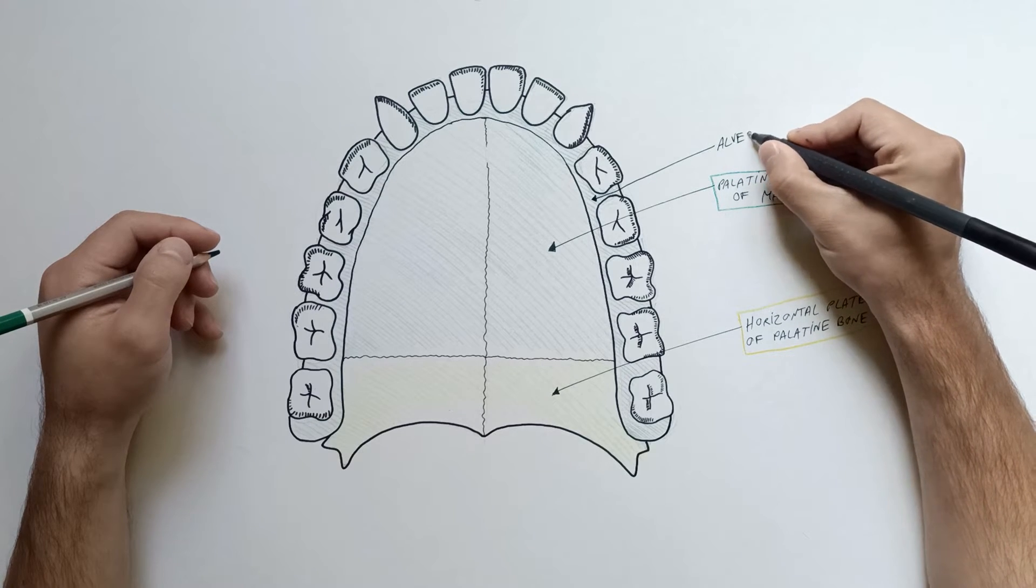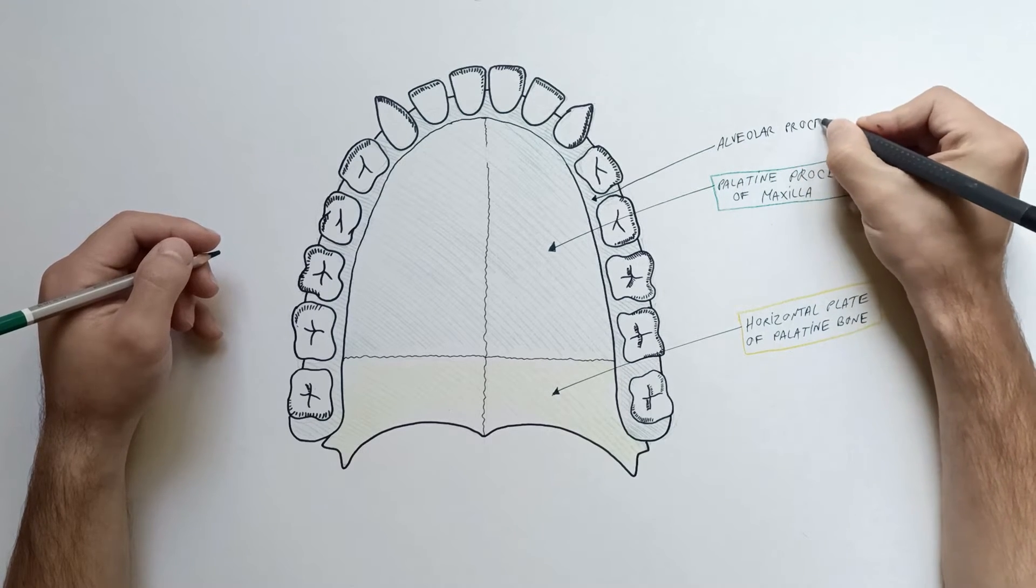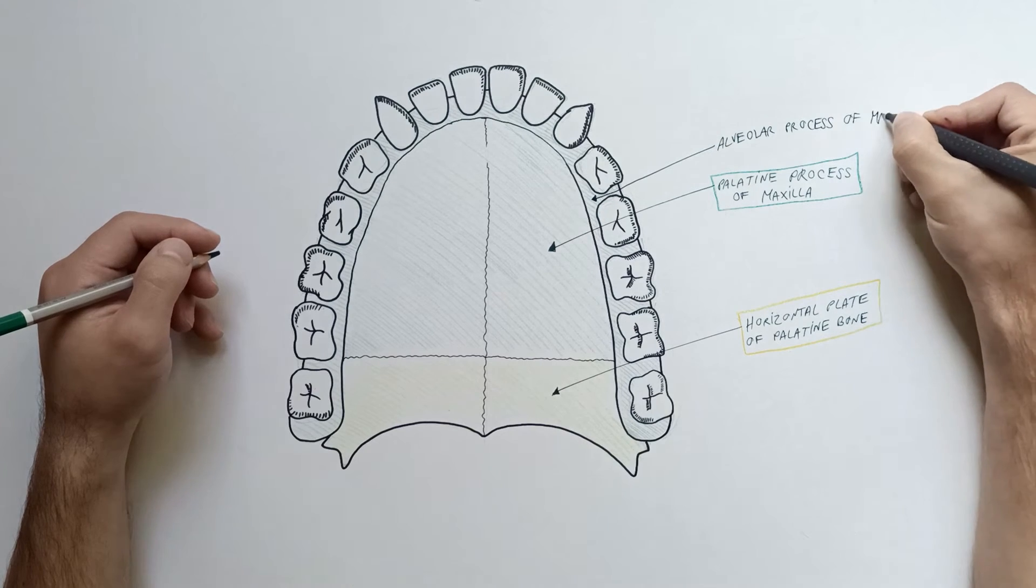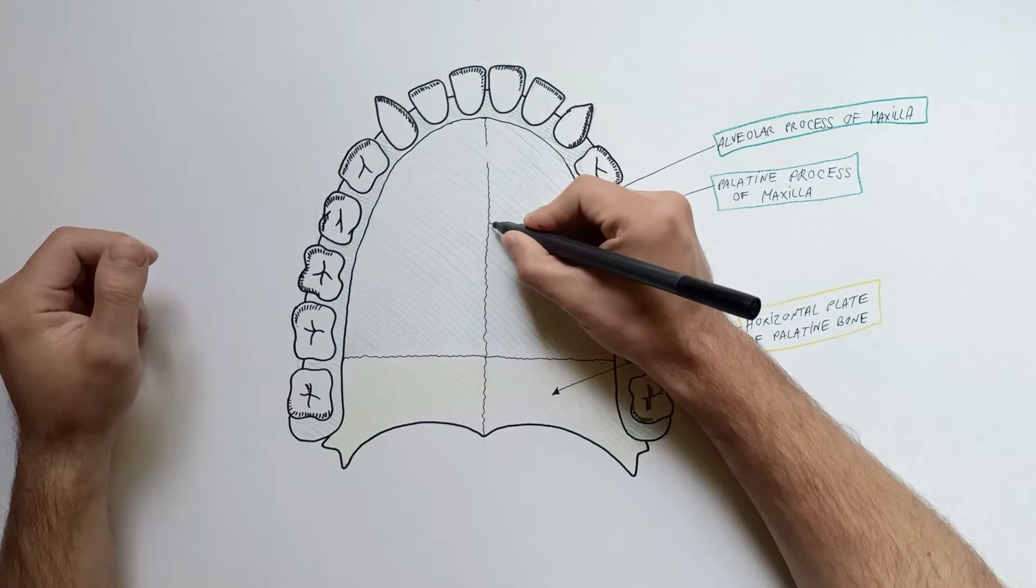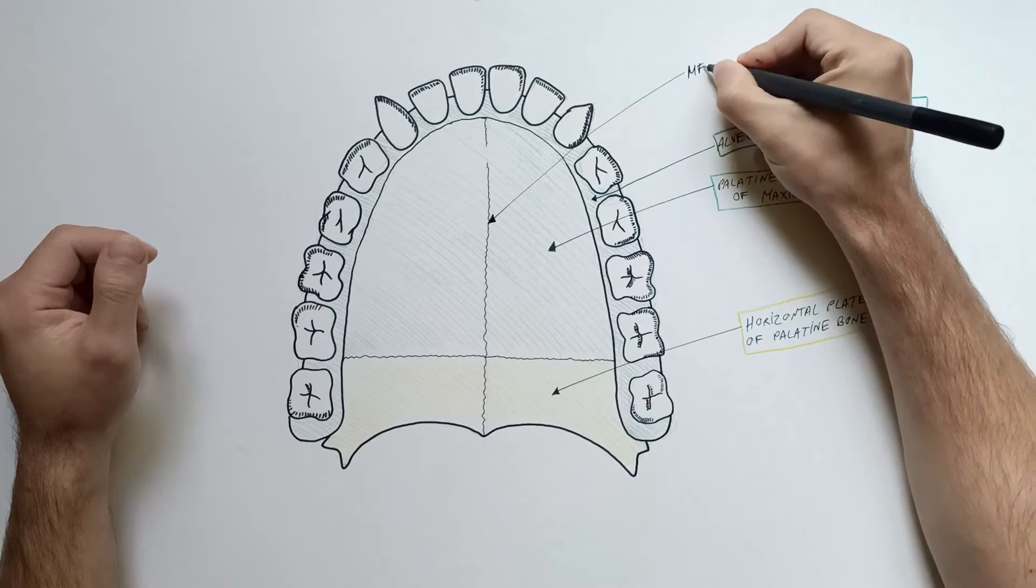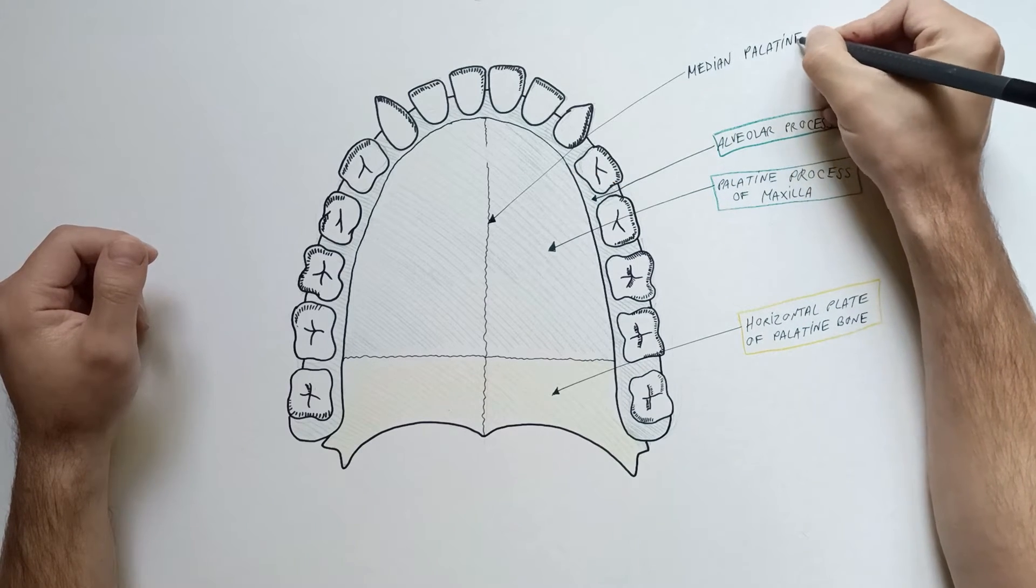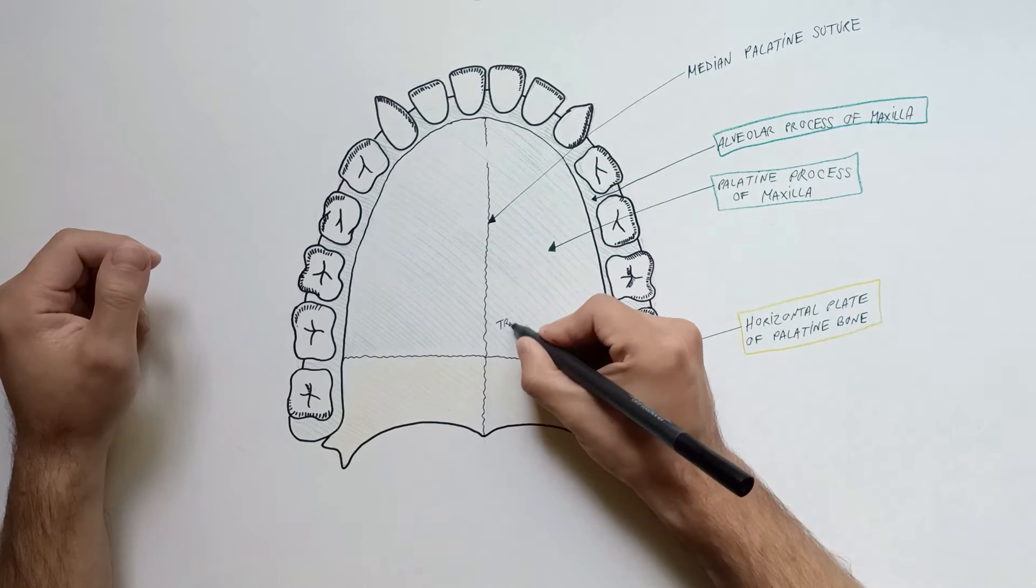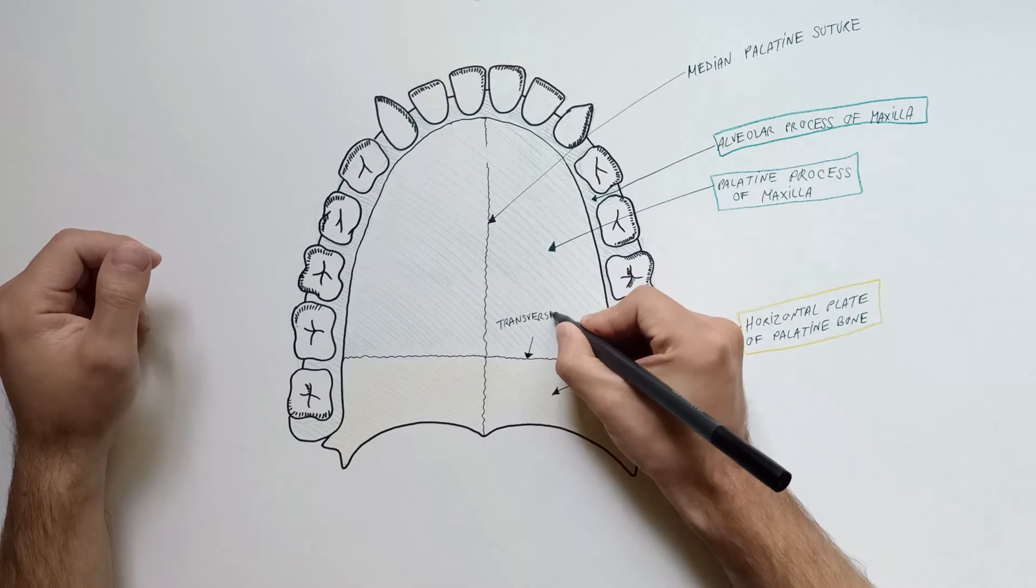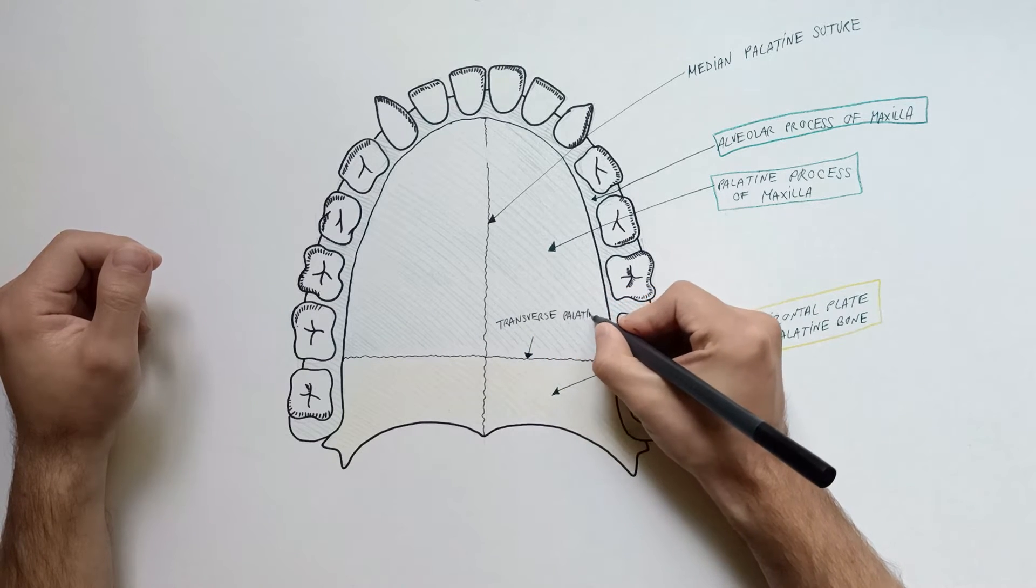On each side, the palatine process of maxilla is continuous with the alveolar process of the maxilla. The hard palate presents two sutures: the median palatine suture between the bones of the two sides, and a transverse palatine suture between the maxillary and palatine parts.